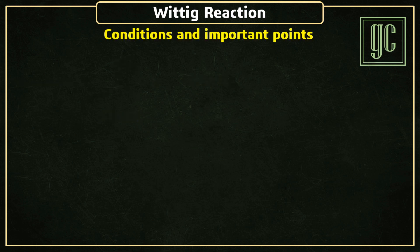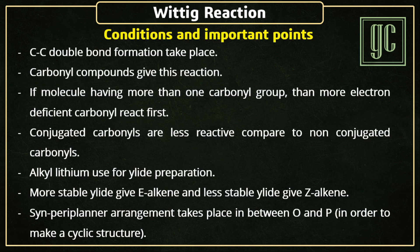Next are the conditions and important points for this reaction. Carbon-carbon double bond formation takes place. Carbonyl compounds give this reaction. If a molecule has more than one carbonyl group, then the more electron-deficient carbonyl reacts first. Conjugated carbonyls are less reactive compared to non-conjugated carbonyls.